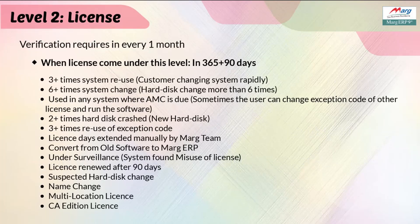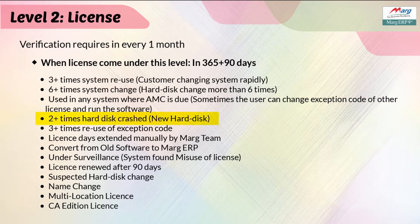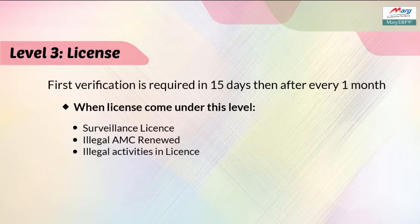Now let us come to the second level of license verification. If the registered license on the system is used three or more times in 365 plus 90 days, or if the hard disk of the system in which the license is registered has changed six or more times, or if the license is used in a system whose AMC is due, or if the hard disk crashes two or more times — then the license needs to be verified every two months.